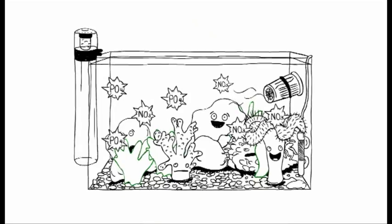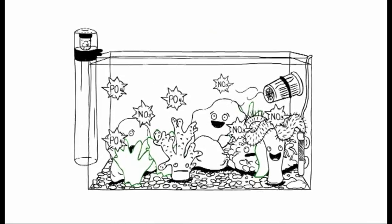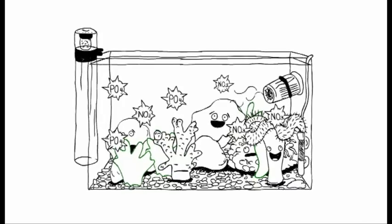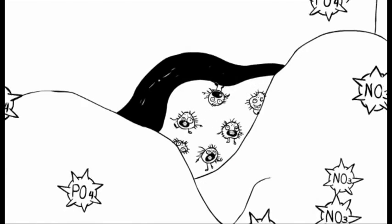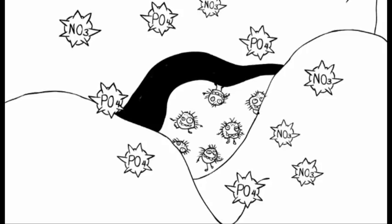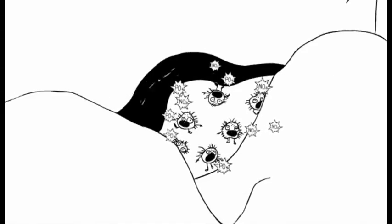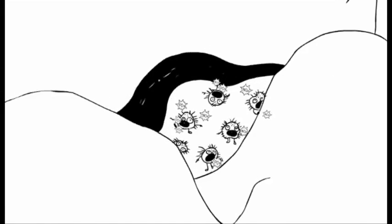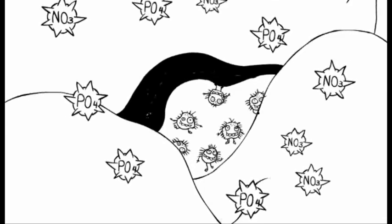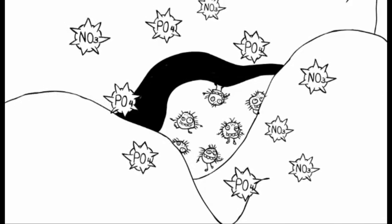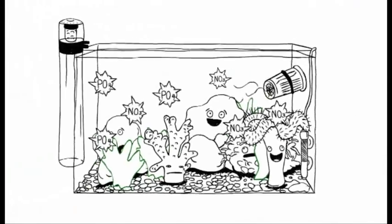In every aquarium with live rocks, marine substrate or porous filter media, there are anoxic areas that house colonies of nitrate and phosphate-reducing bacteria. However, under normal conditions, there are not enough of these bacteria to reduce all of the algae nutrients that are constantly generated in an aquarium. Why? Because even bacteria need nutrients and minerals to flourish.